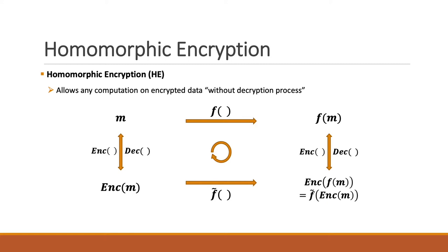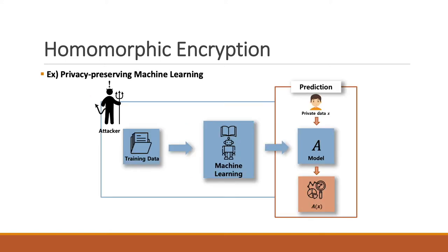Homomorphic encryption is a cryptosystem which allows computation on encrypted data without any decryption process. Theoretically, when we encrypt the data with homomorphic encryption, we can do any computation and any analysis in the real world even without knowing the data itself, which ensures data privacy. One of the most recognized applications of homomorphic encryption is machine learning. At a high level, machine learning is to generate a model from training data and use the model for the inference or prediction phase.